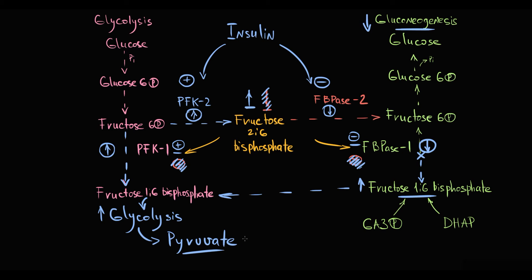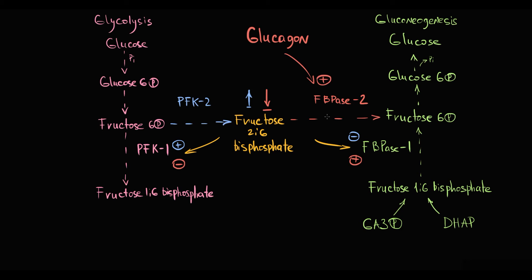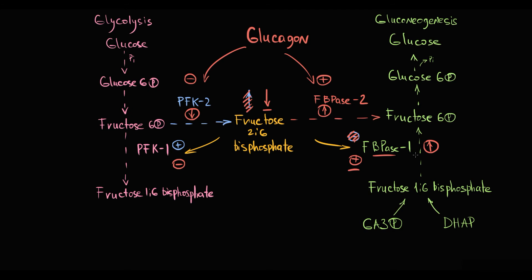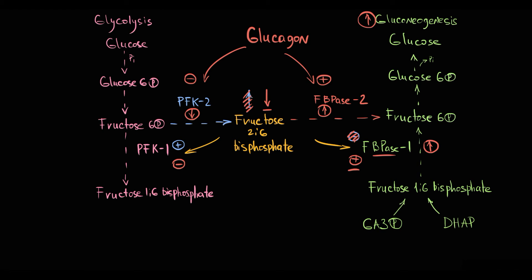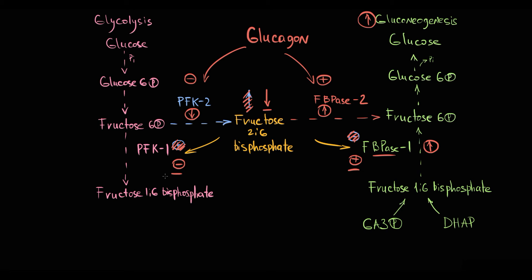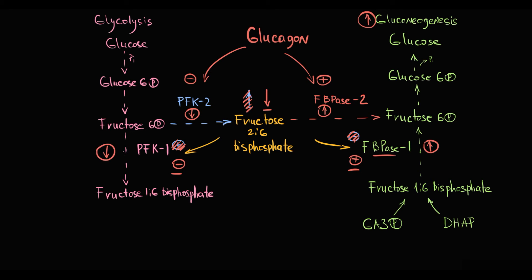In contrast to insulin, glucagon stimulates the activity of FBPase2 and simultaneously inhibits PFK2. So degradation of fructose-2,6-bisphosphate prevails over production, resulting in decreasing fructose-2,6-bisphosphate level. Decreasing fructose-2,6-bisphosphate level stimulates FBPase1, so the conversion of fructose-1,6-bisphosphate into fructose-6-phosphate increases, stimulating gluconeogenesis. Simultaneously, the activity of PFK1 decreases, so conversion of fructose-6-phosphate into fructose-1,6-bisphosphate decreases, causing accumulation of fructose-6-phosphate that is shunted into gluconeogenesis.